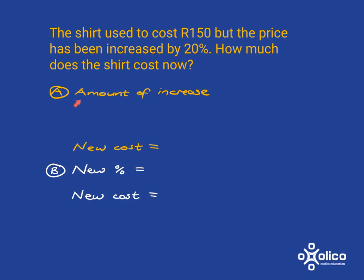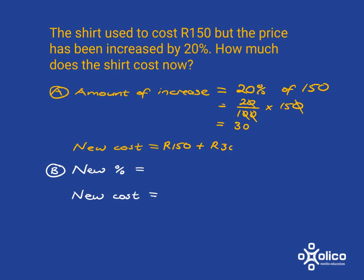In the first way, we look at what the amount of the increase is, and we know it's 20% of the 150 — that's how much the price goes up by. We know how to work out 20% of 150: it's just 20 over 100 multiplied by 150, and we can do a bit of cancelling to make that easier, so we get the answer of 30. So the price of the shirt goes up by 30 rand, meaning the new cost is the original cost plus 30 rand, giving us 180 rand.